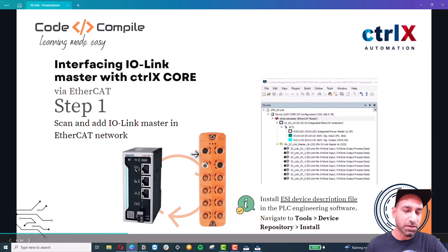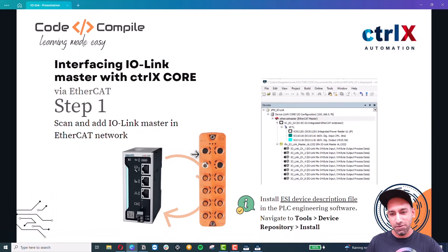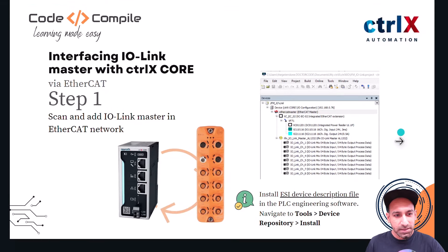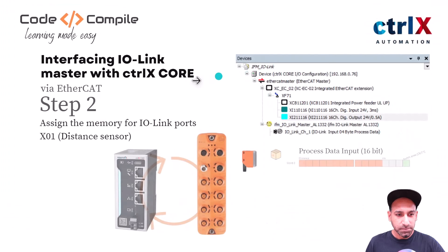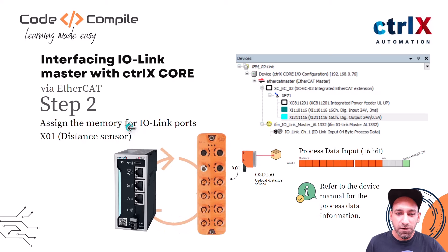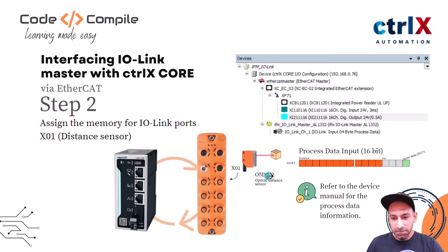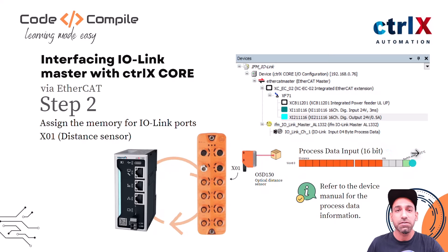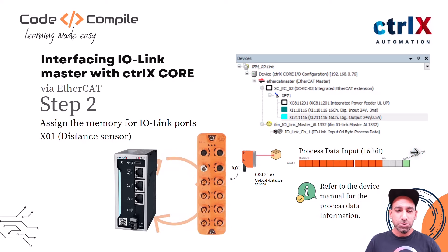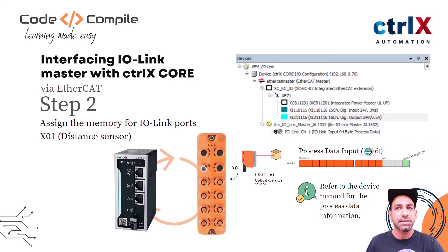Step 1 — scan and add the IO-Link master — was very easy. Step 2: assign the memory for IO-Link ports. I'm using two IO-Link devices. The distance sensor is model O5D150. It has a process data input — check your sensor's manual for the required memory. This sensor needs 16 bits: a switch state bit and the distance value in the remaining bits, giving two bytes of total memory.